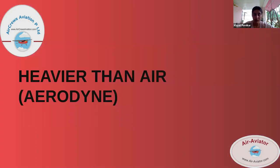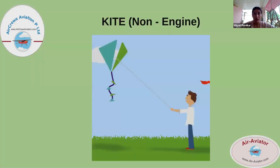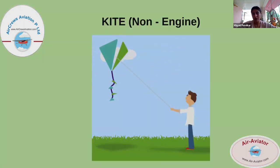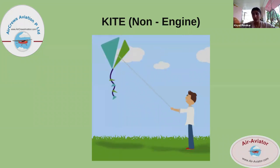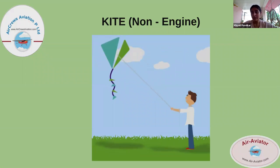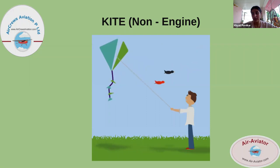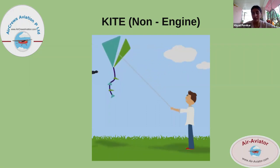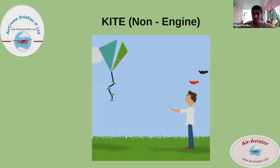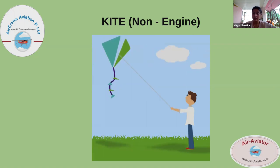Now moving to examples of heavier-than-air aircraft, or aerodynes. The first is a kite — which all of us know from childhood. A kite is a tethered heavier-than-air aircraft with wing surfaces that react against the air to create lift and drag forces.